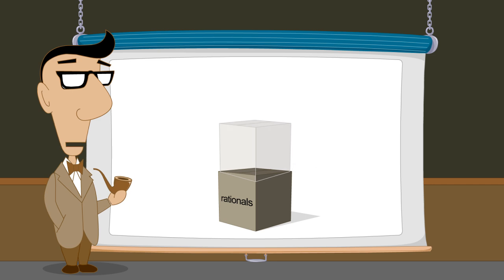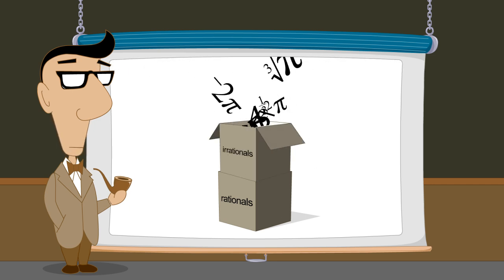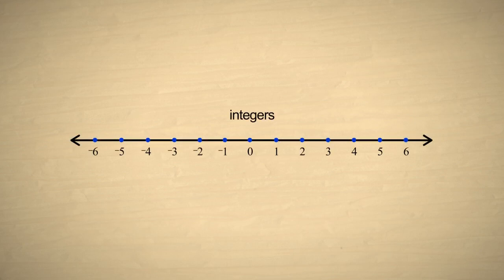These quantities formed an infinitely large group of numbers called the irrational numbers. There are also an infinite number of rational numbers. This is obvious since the rational numbers include all the integers, and there are an infinite number of integers. But there are also an infinite number of rational numbers between any two integers.